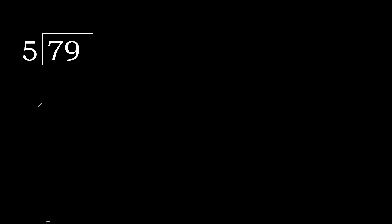79 divided by 5. 7 is not less, therefore with 7. 5 multiplied by which number is nearest to 7 but not greater? 5 multiplied by 2 is 10 — 10 is greater. 5 multiplied by 1 is 5. 5 is not greater. 7 minus 5 is 2.